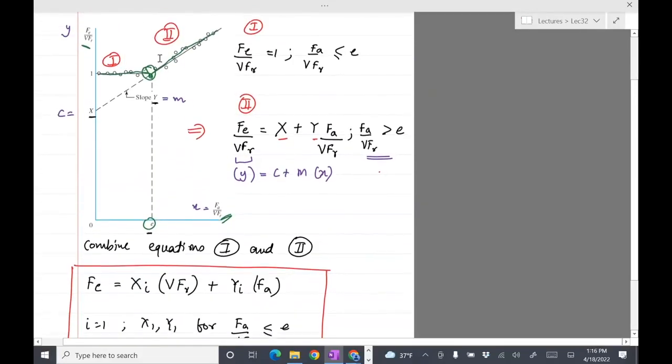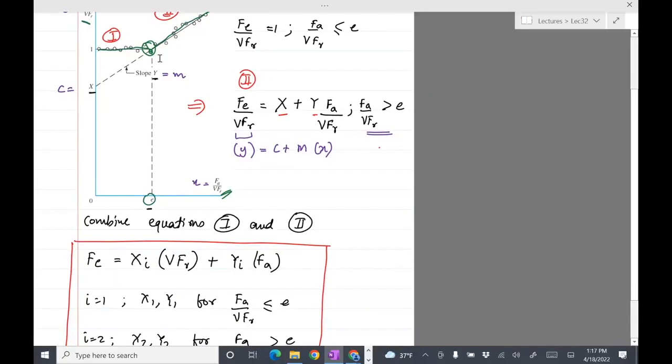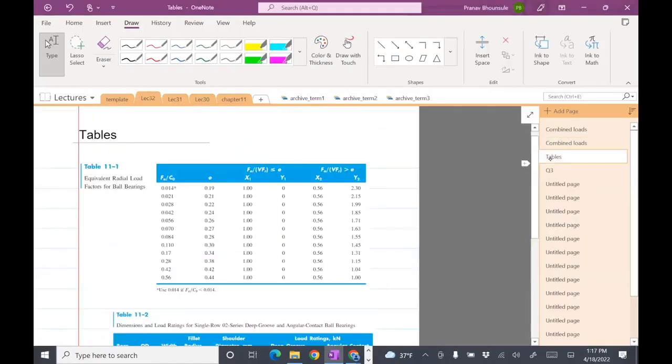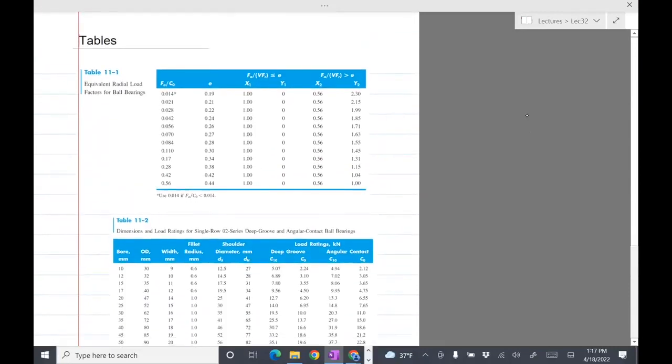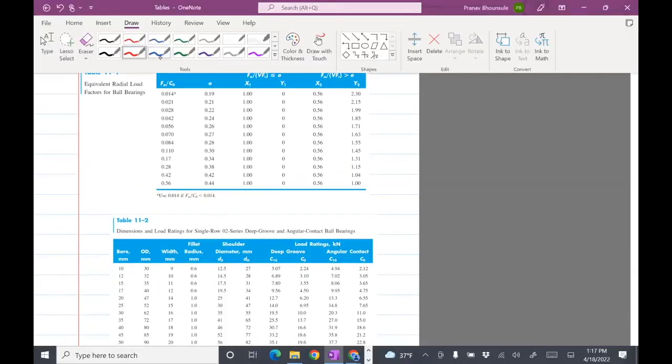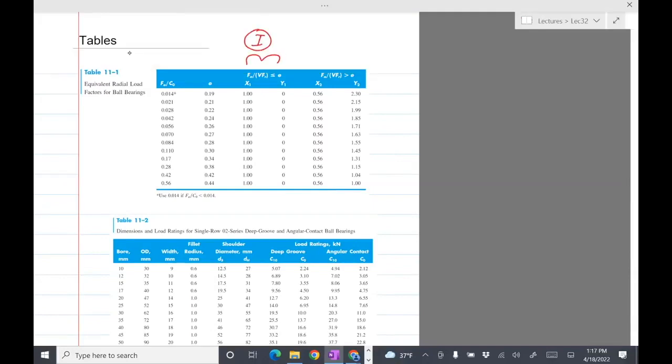Here I equals 1, that will be X1, Y1 for FA divided by V or less than E. And I equals 2, or X2, Y2 for FA divided by V times FR is greater than E. So that's the formula you want to remember. Now, the question is, how do you compute XI, YI? Those things come from experiments. These dots, the circles came from experiments. So you need to basically curve-fit the points using the line and then find the constant. So there's a table in the book which gives you these values.